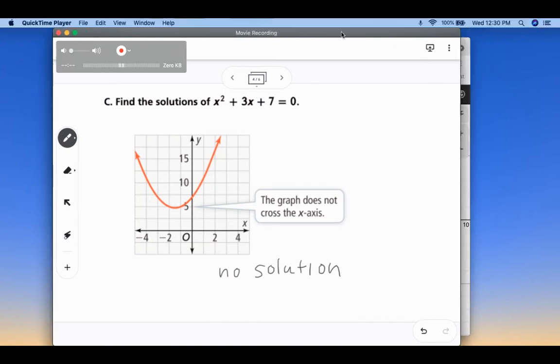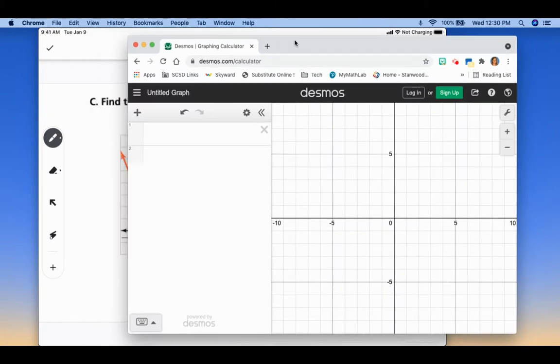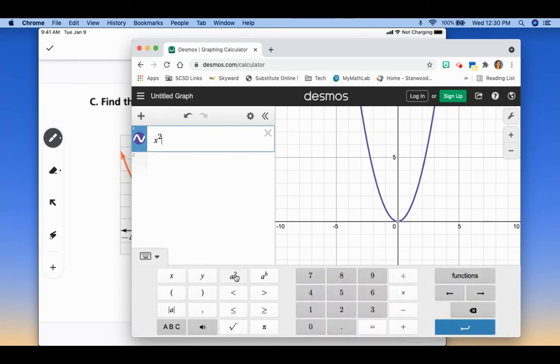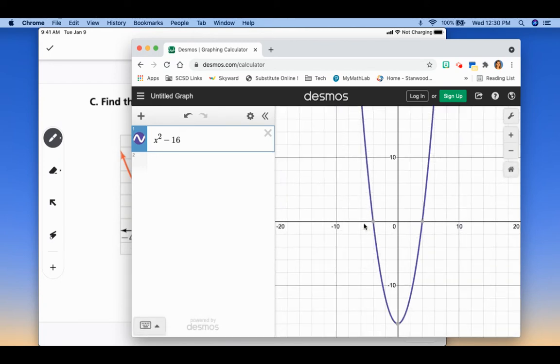So before we go on to our next example, I just want to show you how you can graph these to determine how many solutions they have. So if you go to Desmos, remember Desmos, you can do the Desmos app, or you can go to Desmos, D-E-S-M-O-S, the website, and we could type in x and then go down here and get the x² - 16. So that was our first graph that we looked at. I'm going to zoom out a little bit and we can see the two points. You can click those points. Those are my two solutions, negative 4, 0, and positive 4, 0.